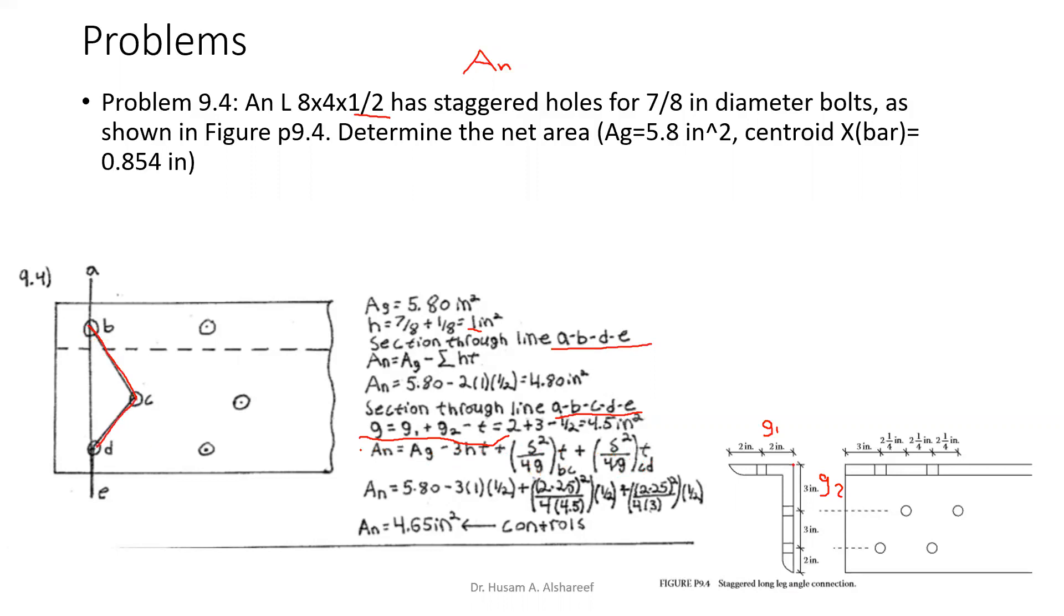Plugging in: 5.8 minus 3 holes times 1 times 0.5, plus 2.25 - and that's your s distance, which is from here to here. The 3 is not our concern; remember, it's between the bolts - squared, over 4 times the g, which we have found here, 4.5, times 0.5, which is the thickness. And we do the same for the second bolt.